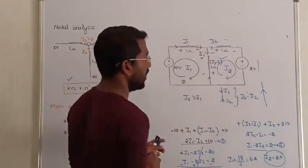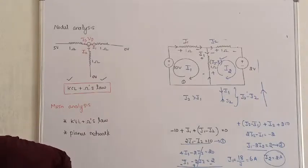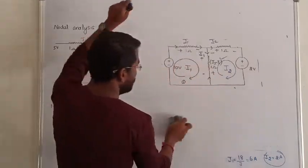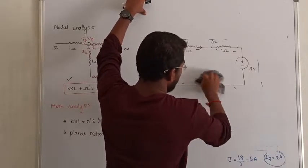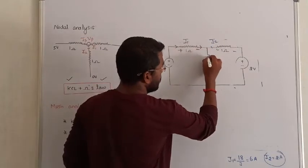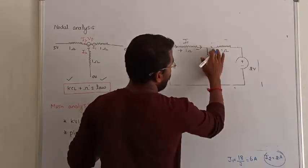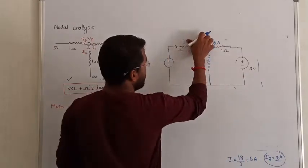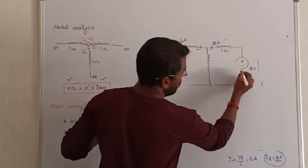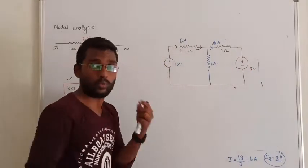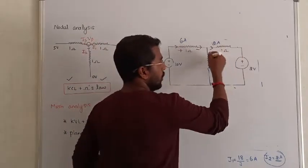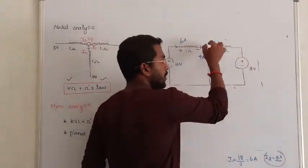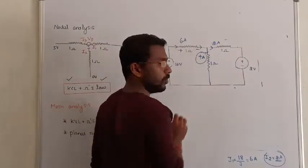Now let me redraw the circuit. We know I1 equals 6A and I2 equals 2A. In the first branch, the current is 6A. In the second branch, the current is 2A. In the center shared resistor, the resultant current is I1 minus I2 equals 6 minus 2 equals 4A. The incoming current must equal the outgoing current. So the current through the center resistor is 4A.